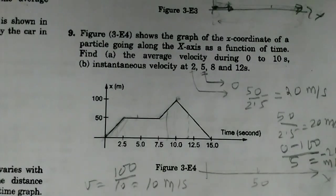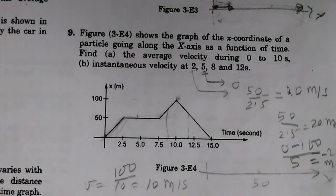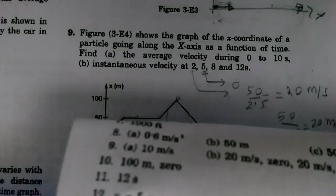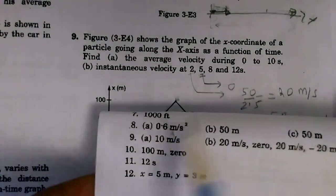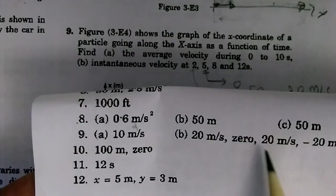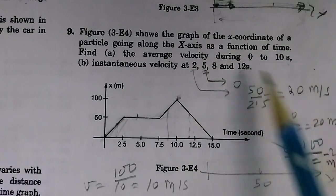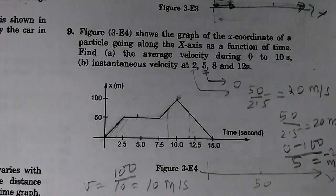This is the answer. Let us confirm it from the answer sheet. Question number 9, this is here, right here. 10 meters per second, 20, 0, 20, minus 20. So 20 is A, 0, 20, minus 20. The question is done.